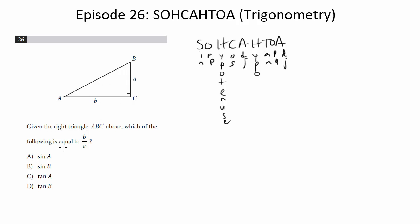And what they want to know is, given this triangle, which of the following is equal to B over A? So let's test out each one of these using SOHCAHTOA, see what they equal, and see which one is B over A.